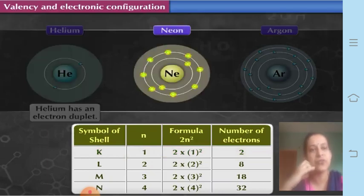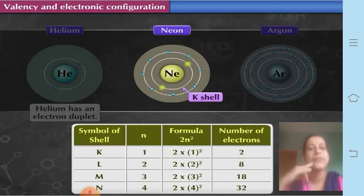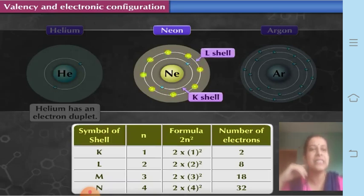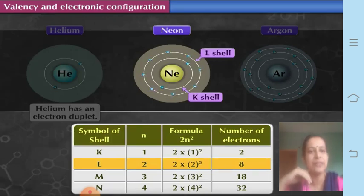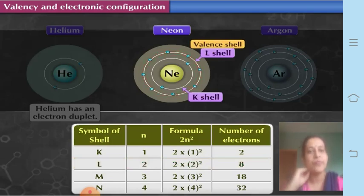Neon has 10 electrons — two in the first shell (K shell) and eight in the L shell. The capacity of the L shell according to 2n² is 2 × 2² = 8. So the L shell becomes the valence shell of neon.